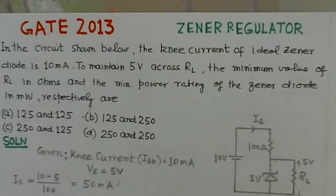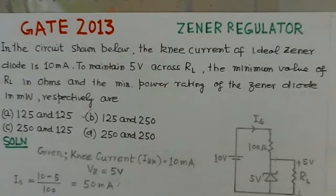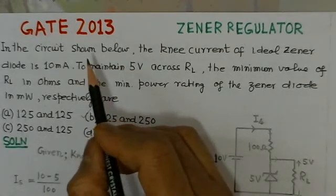The first problem which I have taken up here is the problem of GATE 2013 and this problem is on Zener regulator. Although this problem is a very simple problem, it brings out most of the underlined fundamentals related to Zener diode regulators. That is why I have taken it up as my first problem.